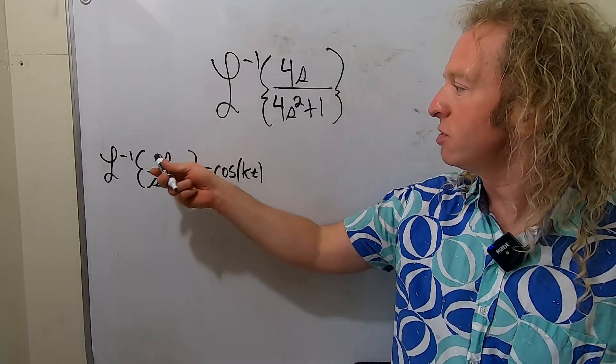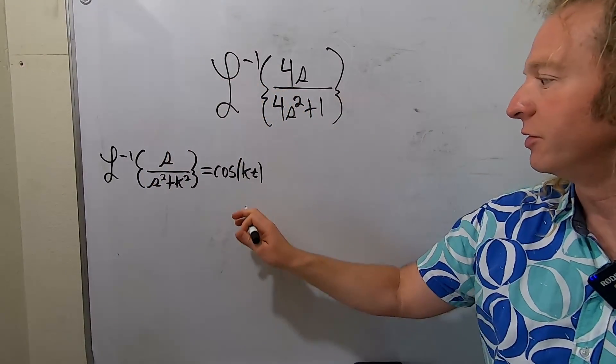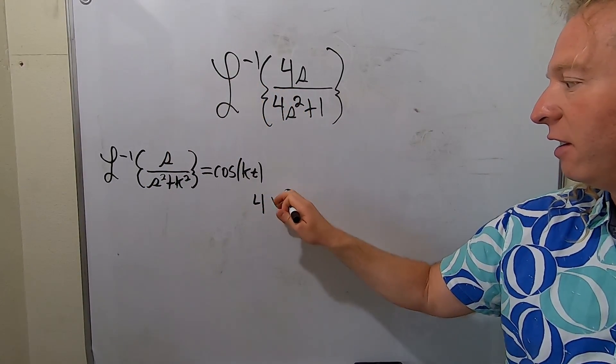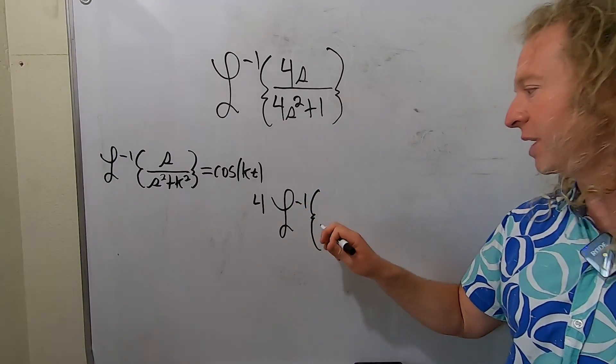So there's no number up here. So maybe we can pull out the 4 up here. So let's do that. So 4 inverse Laplace. And so when we do that, we're left with an s up top.